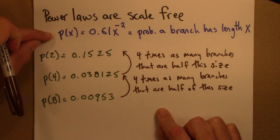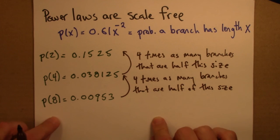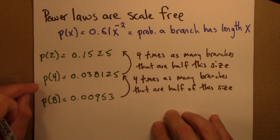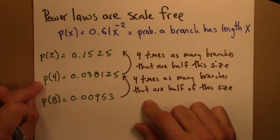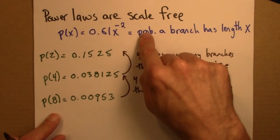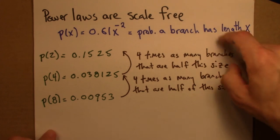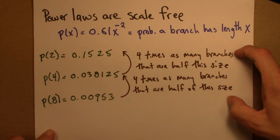So you can't use this distribution to figure out where you are in it if you don't already know. If you're looking at branches of some particular size, well, if you then want to know how many branches are there that are half this size, they're 4 times as many. But that's true no matter where you are in this distribution. So that's another way of seeing that power laws like this are scale-free.